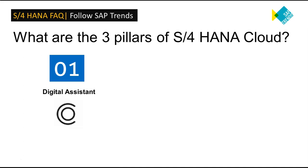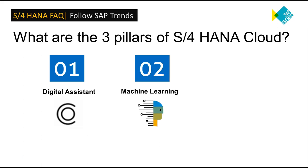Pillar 2: Machine Learning. SAP S4 HANA Cloud includes machine learning technology that automates repeated actions or tasks, which can be repetitive and error-prone when done manually, and learns how to perform them more efficiently.